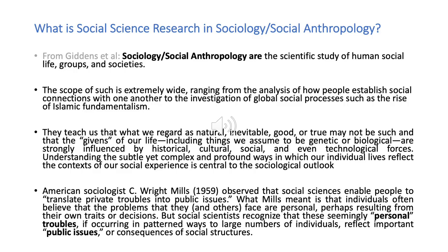A good place to start would be to think about what is Sociology and Social Anthropology, since we are talking about social science research in these two fields. Giddens, as you can see on the slide, defines Sociology and Social Anthropology as the scientific study of human social life, groups and societies. This definition makes the scope of these two fields very large.